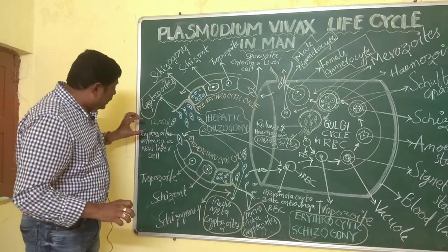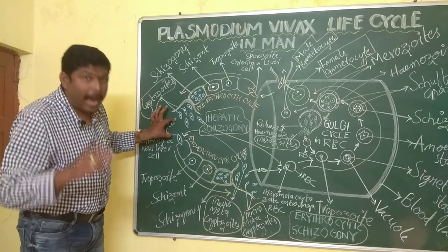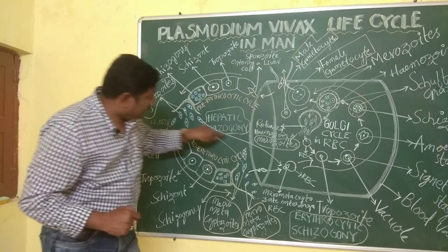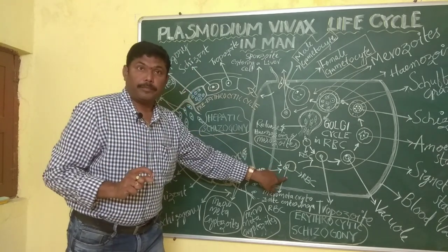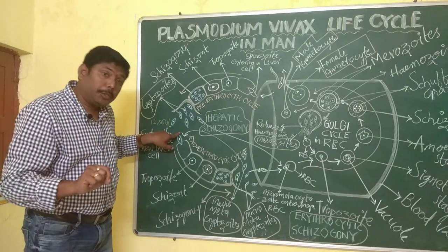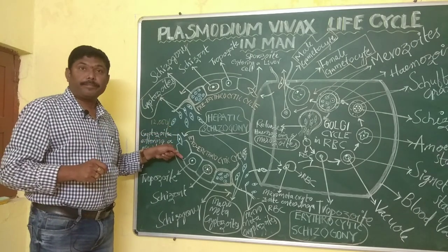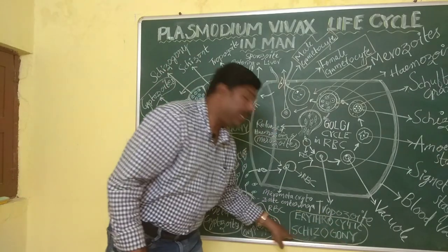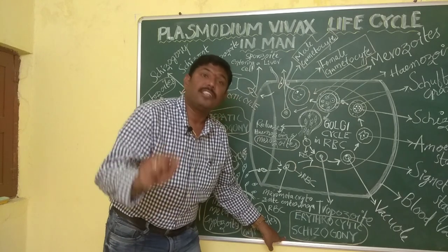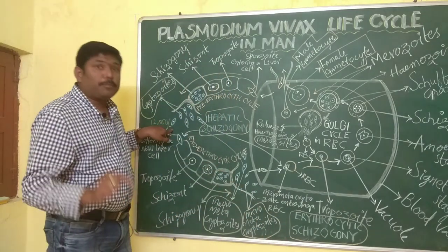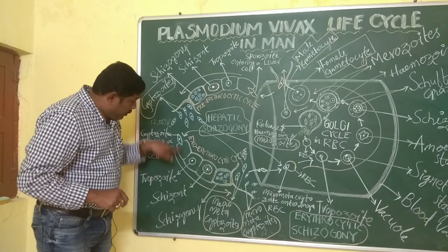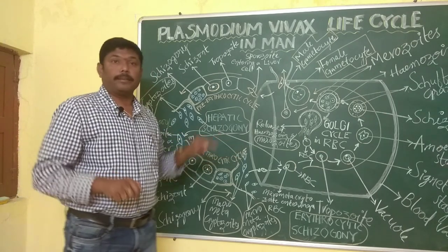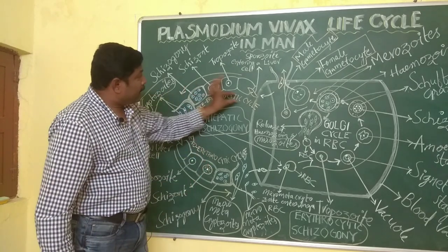These 12,000 cryptozoites are released into the sinusoid space present in the liver. These cryptozoites have two chances: they may enter into the RBC to start erythrocytic schizogony, or they may enter into a fresh liver cell to start the exo-erythrocytic cycle.